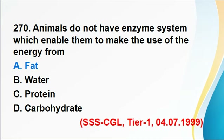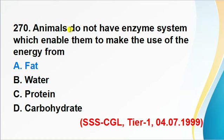Question 270: Animals do not have an enzyme system which enables them to make use of energy from fat. Answer A is correct. Animals are unable to convert fatty acids directly into glucose. Plants do have this mechanism where fatty acids are converted into carbohydrates, but animals lack any enzyme system that directly converts fatty acids into glucose.